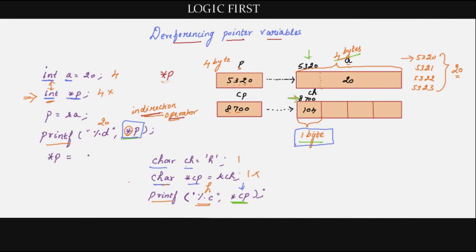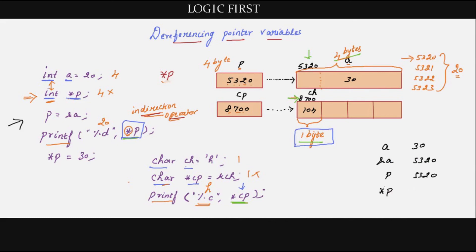That is the only reason we match the types of the variable and the pointer — just to know how many bytes of data to fetch when using star p. By using star p, I can not only fetch but also change the value present in memory. If I give star p = 30, it will go to that address and change the value there; 20 will now be modified to 30, and 'a' is now changed to 30. Now if we print 'a' it will be 30. If you print &a, the address 5320 is printed. If you print 'p', it has the address, so that address will be printed.